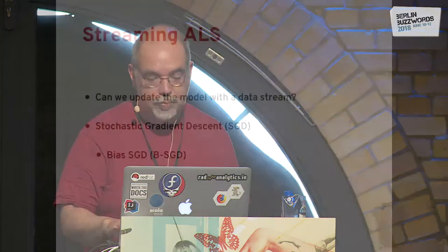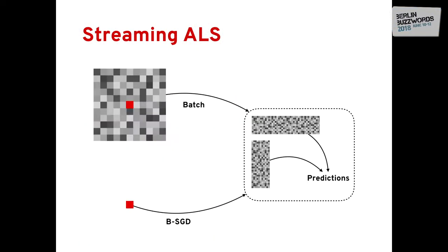Ideally, we want a method that lets us update matrices U and P just one observation at a time. It turns out that stochastic gradient descent — SGD — allows you to do precisely that. We look at a specific case: the biased stochastic gradient descent. Both methods aim at the same thing: factorizing a ratings matrix into latent factors for predictions. The main difference is that batch uses all the data, while SGD uses a single observation.